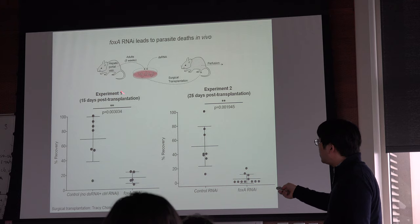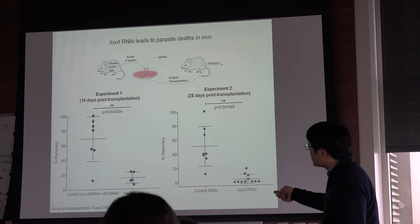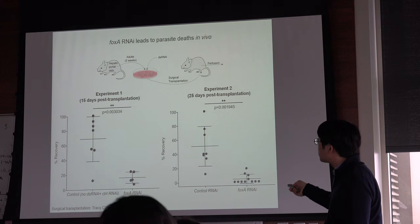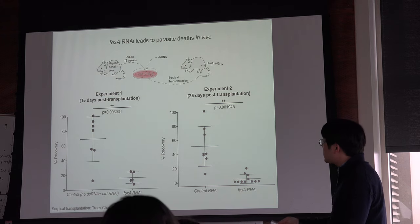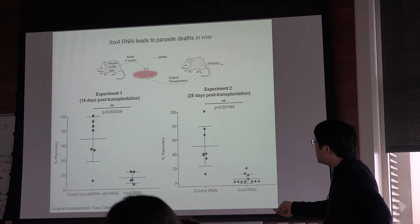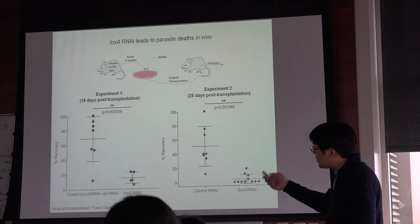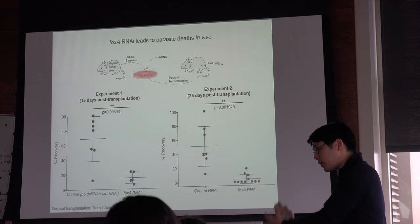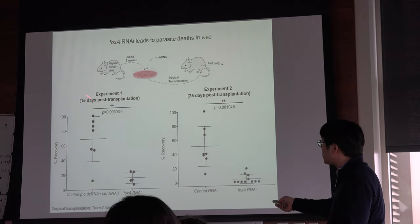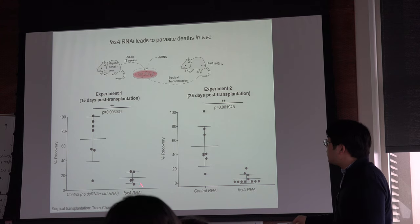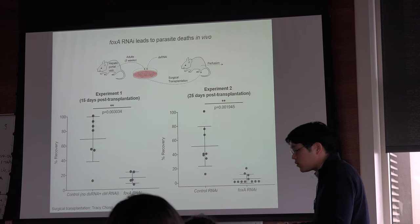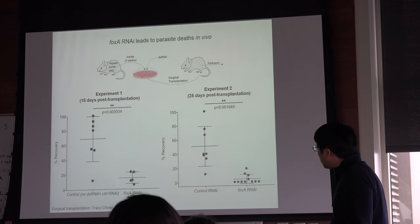To our excitement, in both cases — 15 days post-transplantation and 25 days post-transplantation — you can see a significant reduction in the percent recovery. We are measuring the number of worms that went in and counting the number of worms that came out after perfusion after this number of days, and there is a significant reduction in the number of worms recovered.